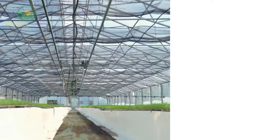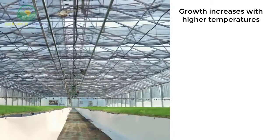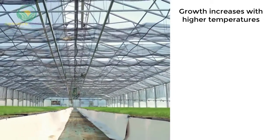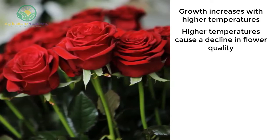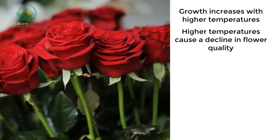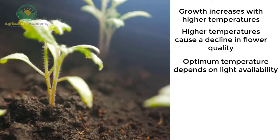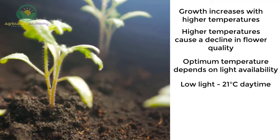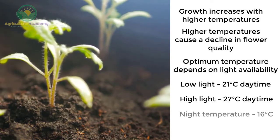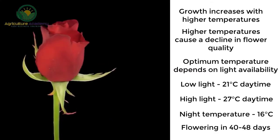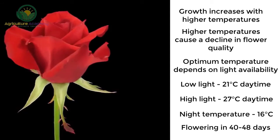Temperature. There is a correlation between growth rate and temperature — as temperature increases, so does growth. However, higher temperatures cause a decline in flower quality, because petal number and bud size decreases. The optimum temperature changes depending on light availability. Day temperatures of 21 degrees Celsius are suitable for low light conditions, and 27 degrees Celsius for high light conditions. Night temperatures should be around 16 degrees Celsius. Flowers will take 40 to 48 days to develop at these temperatures.